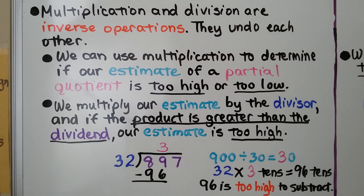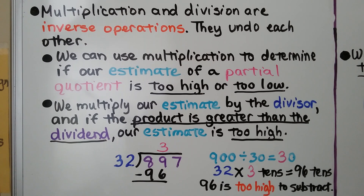Multiplication and division are inverse operations — they undo each other. We can use multiplication to determine if our estimate of a partial quotient is too high or too low. We multiply our estimate by the divisor, and if the product is greater than the dividend, our estimate is too high.